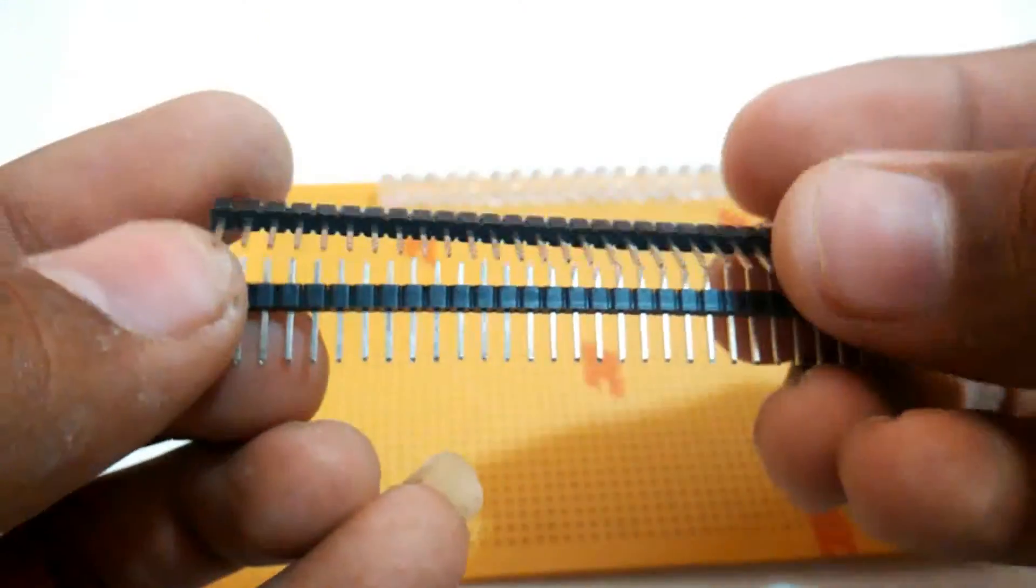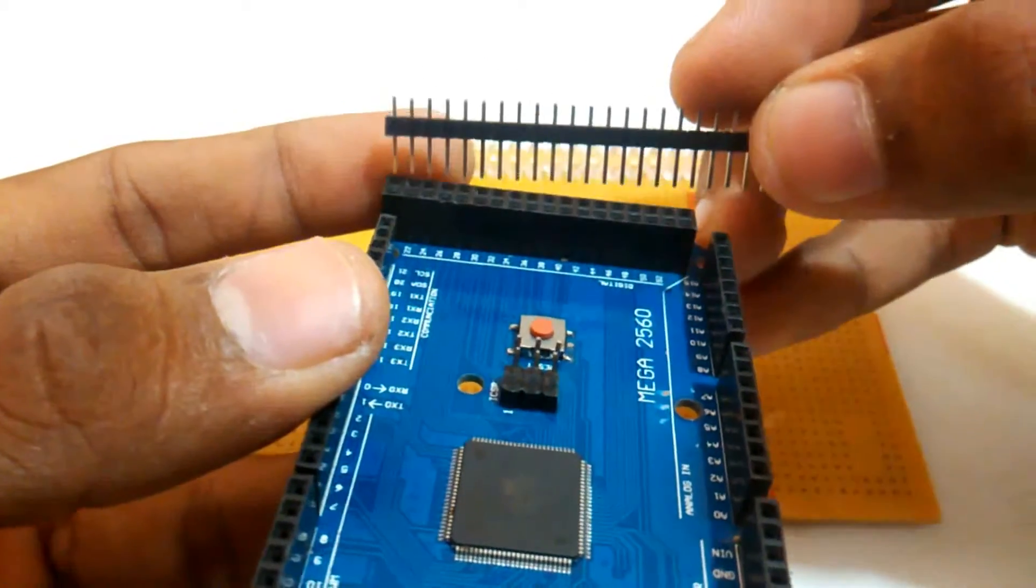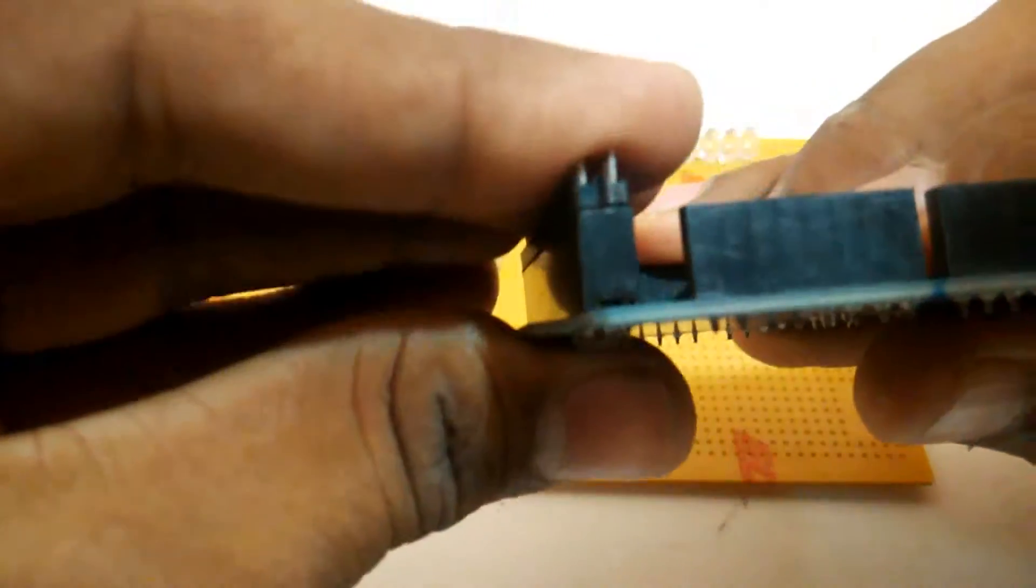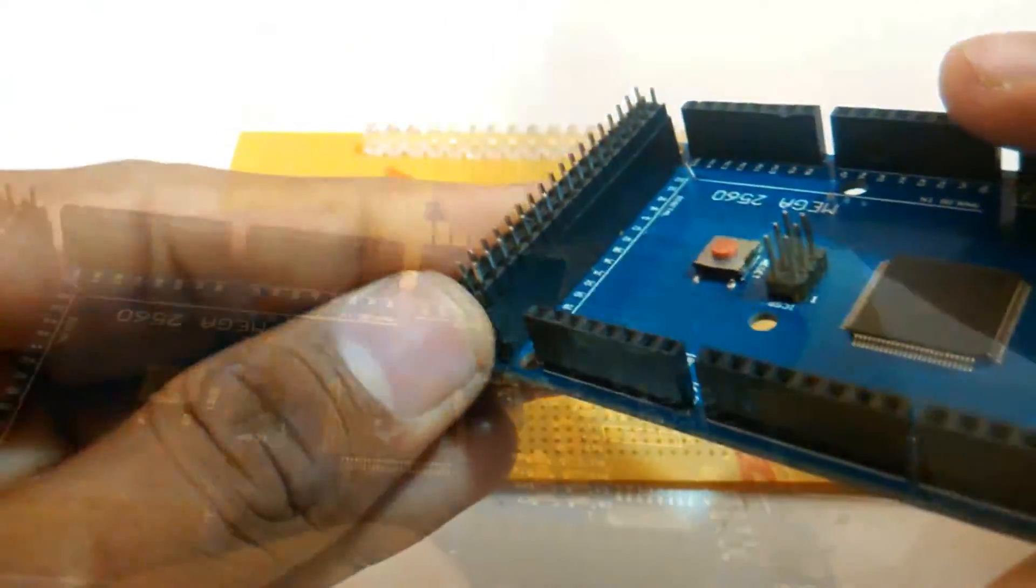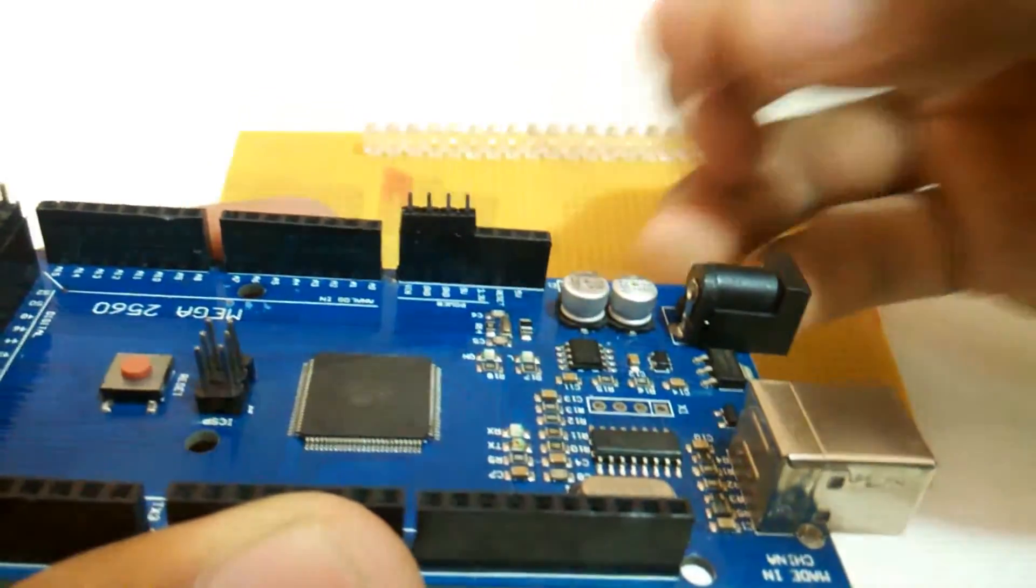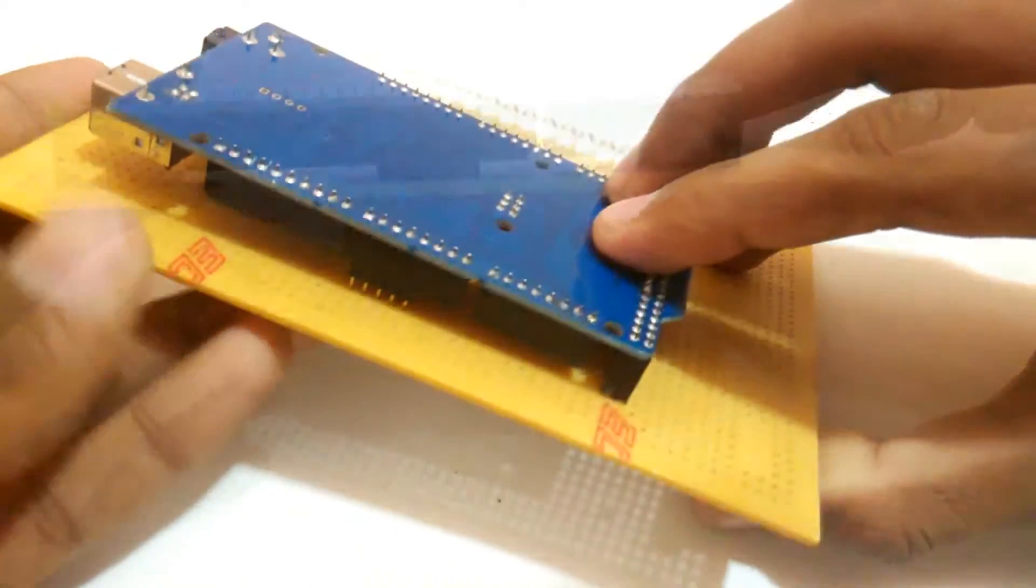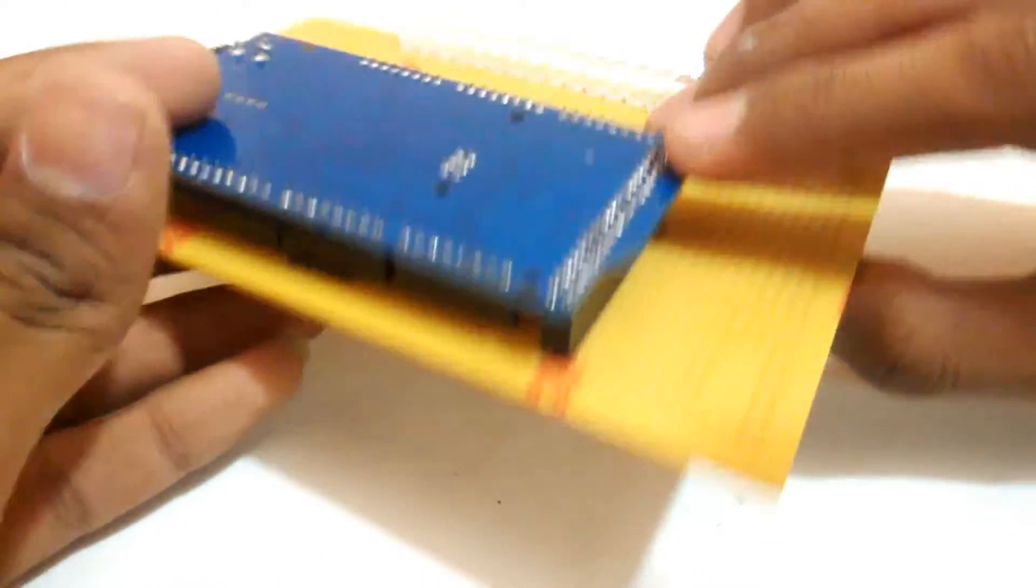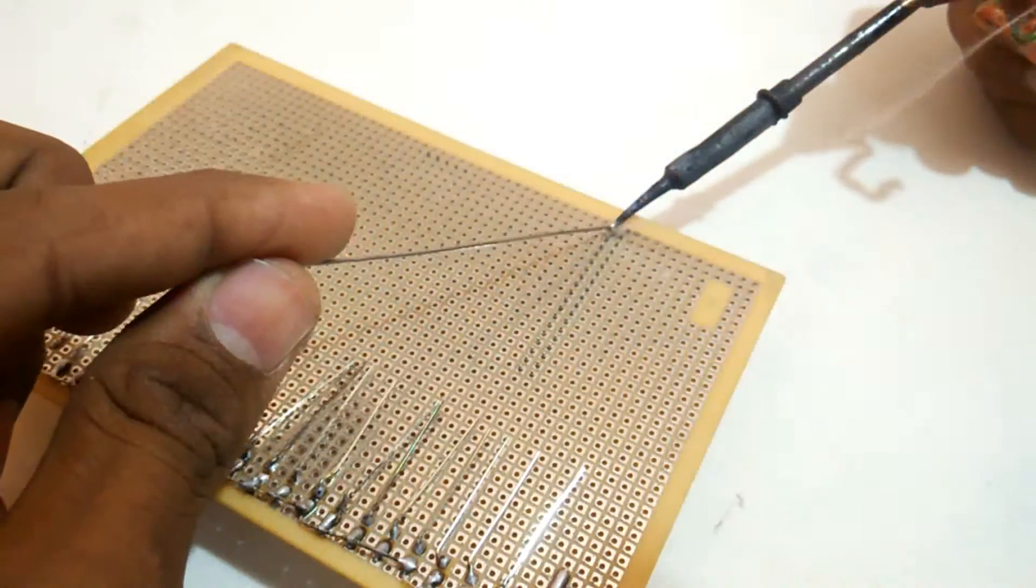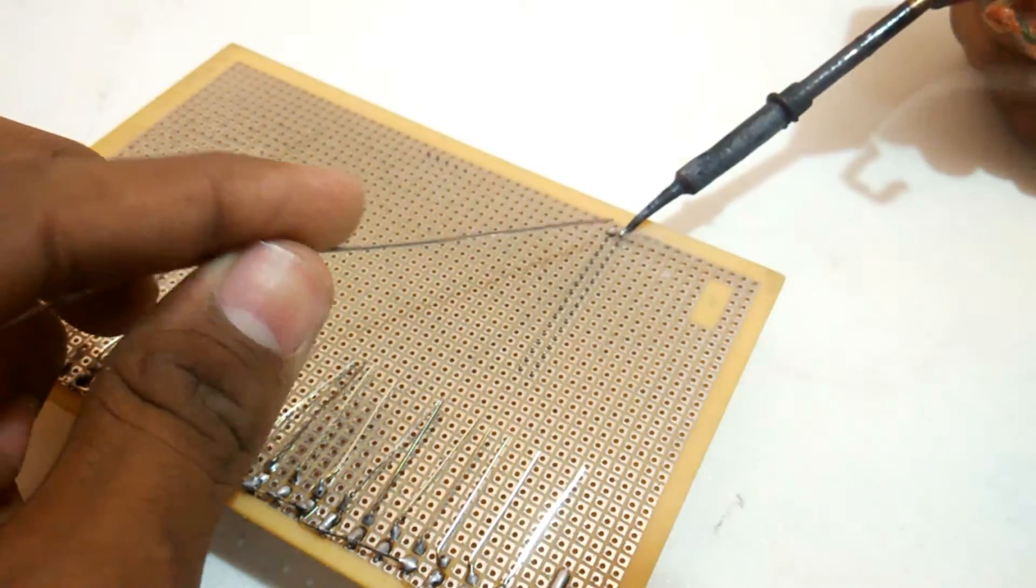Now we are going to use these male header pins and insert them directly to the Arduino Mega. A few of those will be used in the analog input-output pins, and a few of those will be for support. Now press the Arduino on the PCB and make sure all the pins have the correct orientation, and solder them together.